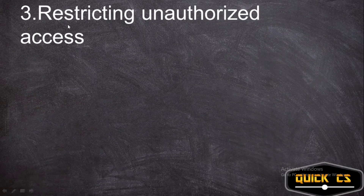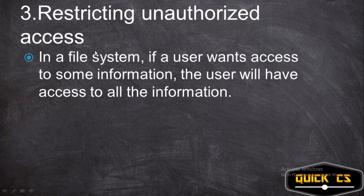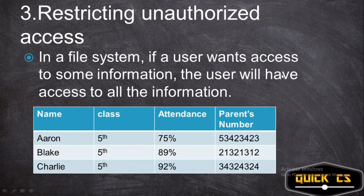The first security advantage is restricting unauthorized access. In a file system, if a user wants to access some information, the user has to access all the information. For example, we have a file system and a student named Aaron wants to just check his attendance. He comes to the teacher and she shows him the list.